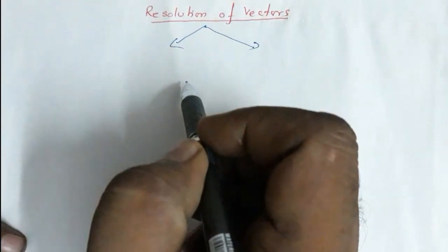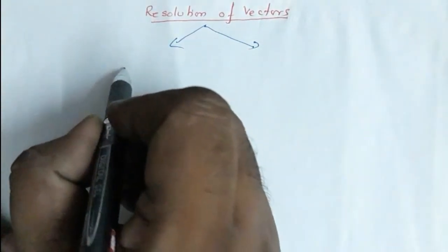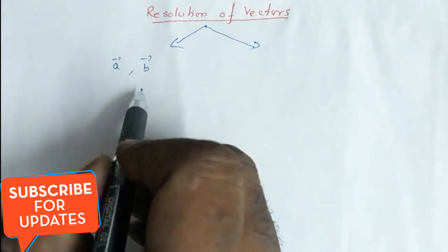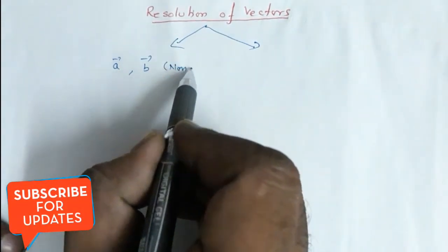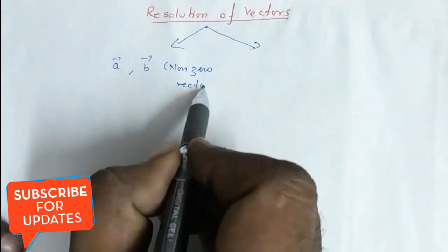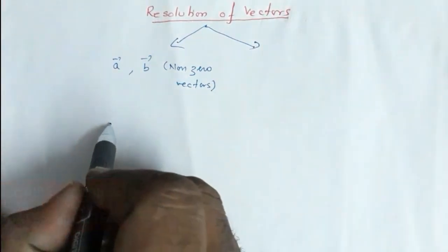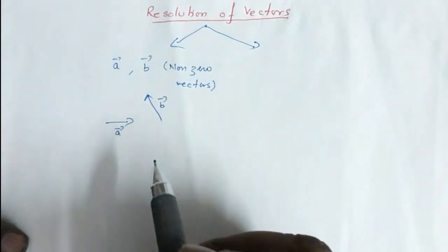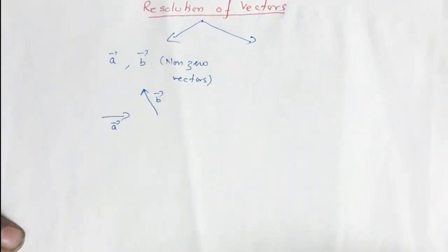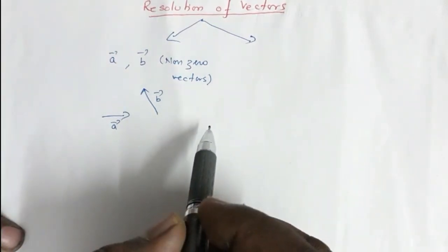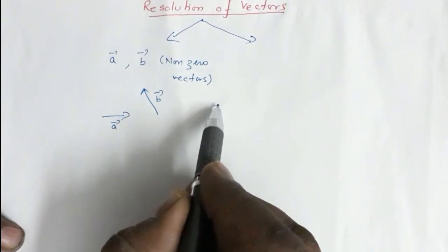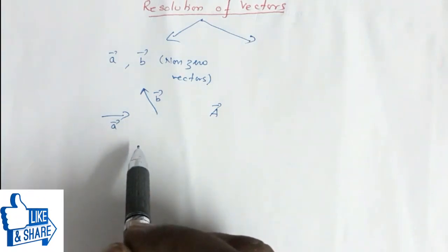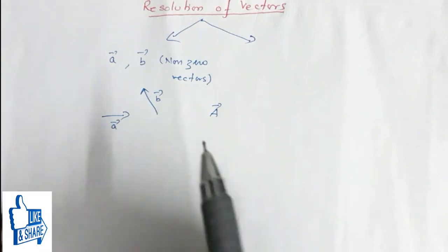First let us see the not so popular way. Suppose you have vector A and vector B — two nonzero vectors. Let us say A is directed in this direction and B is directed in this direction, and they are coplanar. Now let us say there is another vector which also lies on the same plane as vector A and vector B.